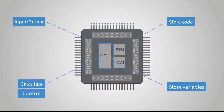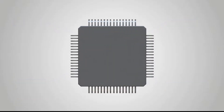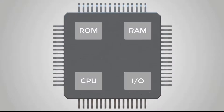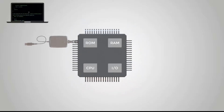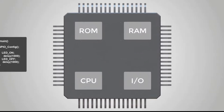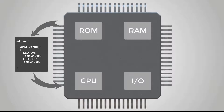So what is the specific workflow of these parts? This is a microcontroller, which contains a CPU, read-only memory ROM, random access memory RAM, and I/O input and output interfaces. Firstly, upload the program to the read-only memory of the microcontroller through the programmer, then the program enters the CPU one by one and executes in the CPU.